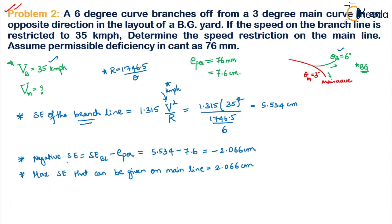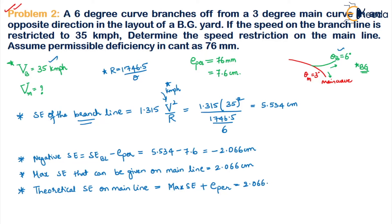However much is the negative super elevation, that much maximum you can give to the main line. Now we have to calculate the theoretical super elevation on the main line. For this, you add up the maximum super elevation with the permissible super elevation. So maximum is 2.066 and permissible is 7.6, giving us a theoretical super elevation of 9.66 centimeters.